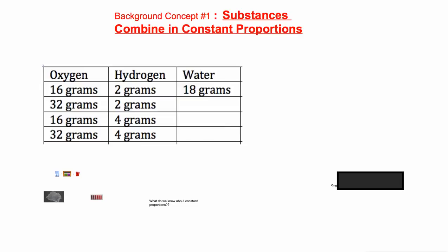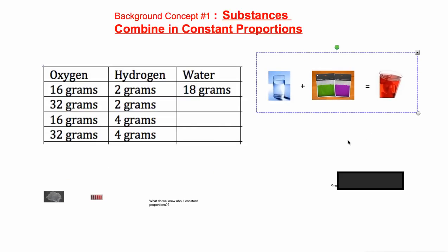The first background concept is that substances combine in constant proportions. Most of you have made at some point in your life a drink called Kool-Aid. You mix some water with some Kool-Aid powder and you get the substance Kool-Aid.